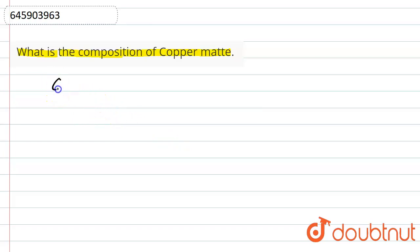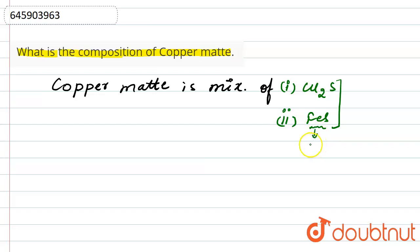We can say copper matte is a mixture of, first, copper sulfide, which means Cu2S, and second is FeS, that means iron sulfide. So a mixture of these two compounds is known as copper matte, in which FeS is present in a small amount.